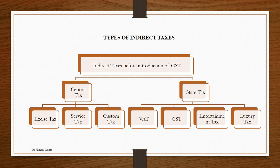The taxes collected by the state government included: VAT (value added tax), CST (central sales tax), entertainment tax, luxury tax, and various others such as stamp duty tax, security transaction tax, and taxes on advertisements. But after the introduction of GST, all these state taxes are subsumed under GST.